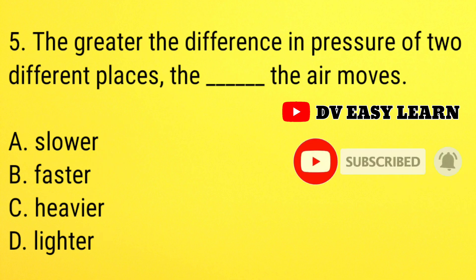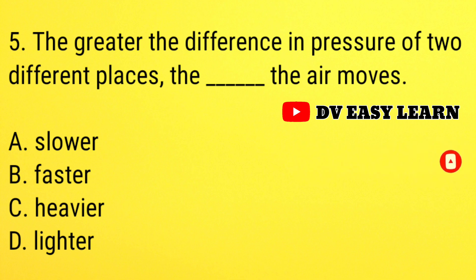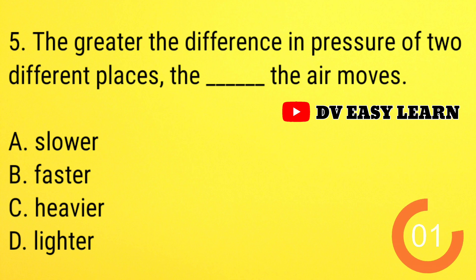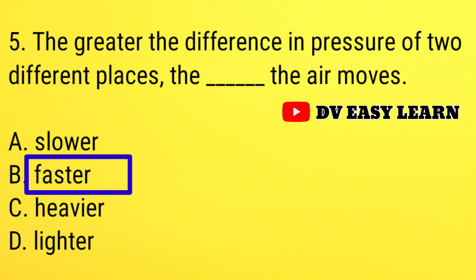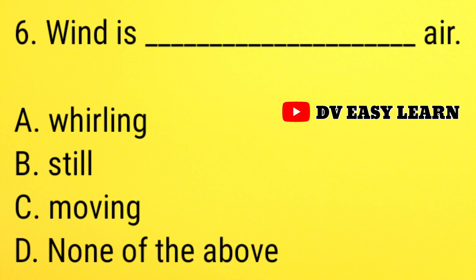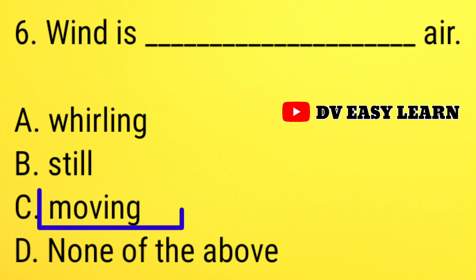Question number 5: the greater the difference in pressure of two different places, the dash the air moves. Correct answer: faster. Question number 6: wind is dash air. Correct answer: moving.